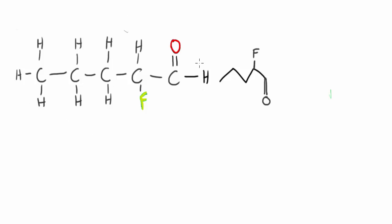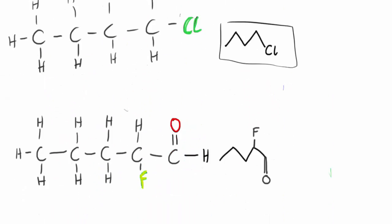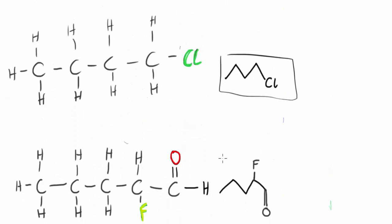What you'll probably want to do is practice having a displayed formula and drawing it out as a skeletal formula. It's a very good idea to check your carbons after you've drawn a skeletal formula, because it's pretty easy to make a mistake — I've made mistakes a lot with drawing this stuff. But yeah, that's basically general formulas and skeletal formulas. I hope you guys found this video helpful and I'll see you in the next video.